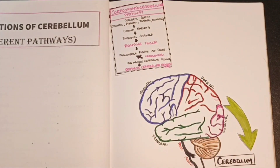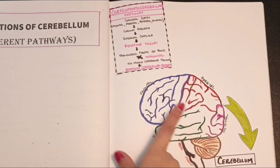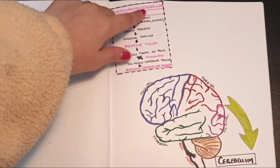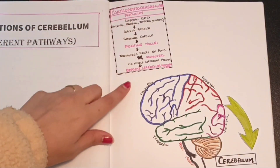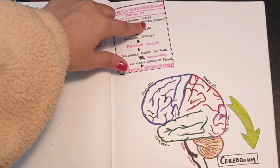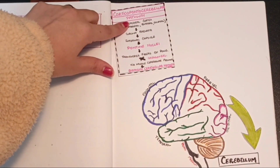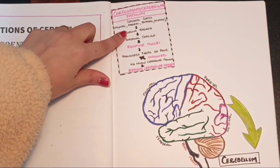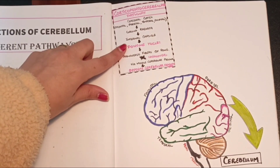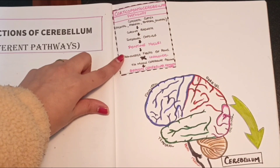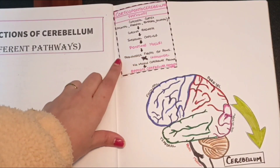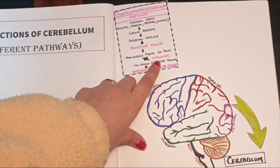The first of the three major afferent pathways from the cerebral cortex to the cerebellum is the corticopontocerebellar pathway. As the name suggests, it connects the cerebral cortex with the cerebellum via the pontine nuclei. The fibers initiate from the frontal, parietal, temporal, and occipital lobes of the cerebral cortex, then pass through the corona radiata and internal capsule, reaching the pontine nuclei of the pons. Here the transverse fibers of the pons arise, and importantly, these fibers cross over, so they enter the opposite cerebellar hemisphere via the middle cerebellar peduncle.